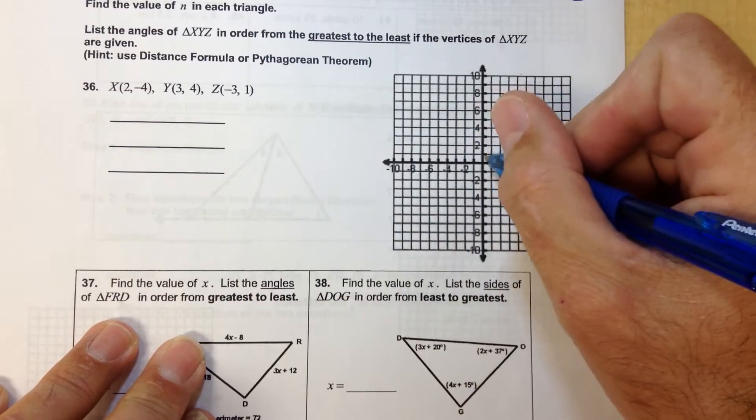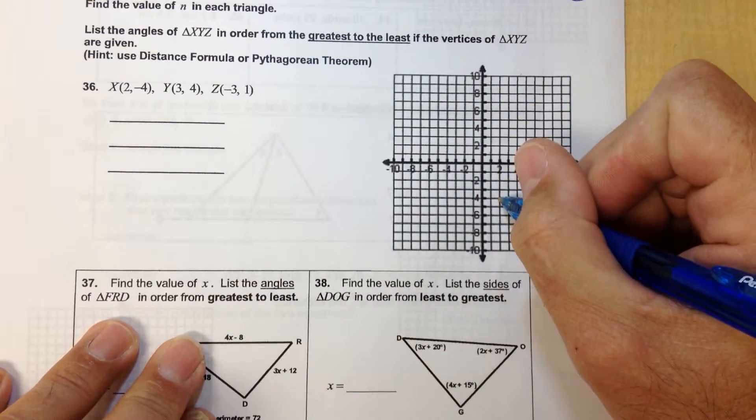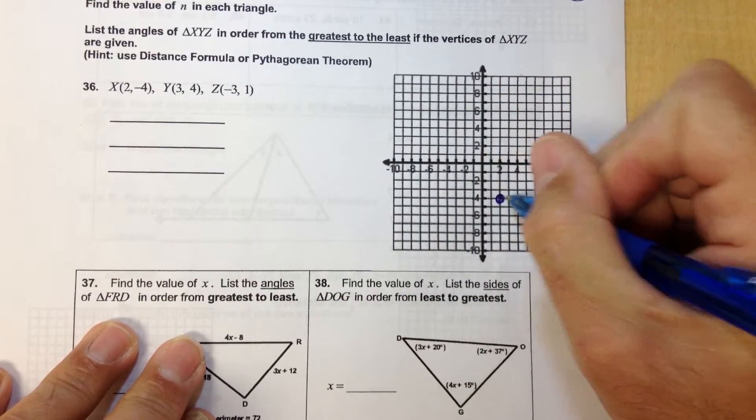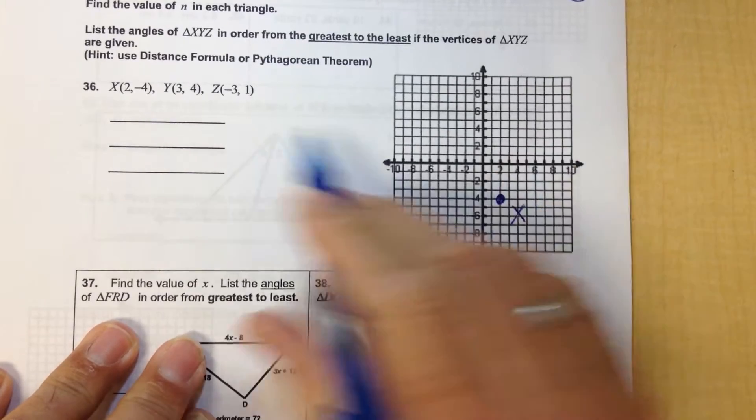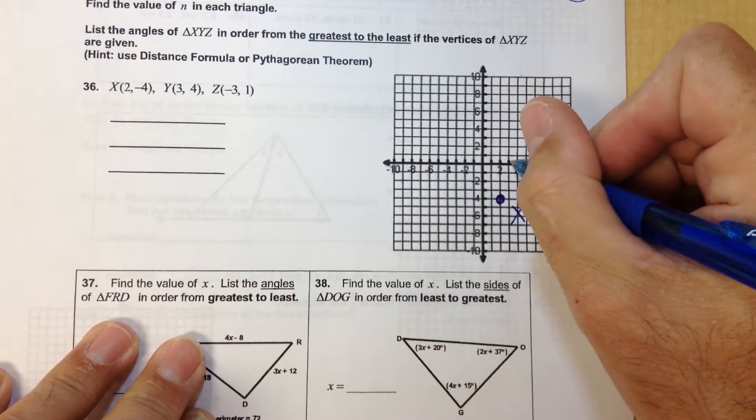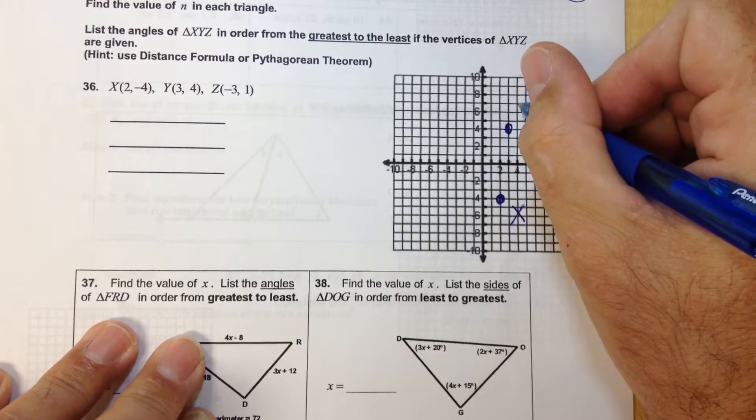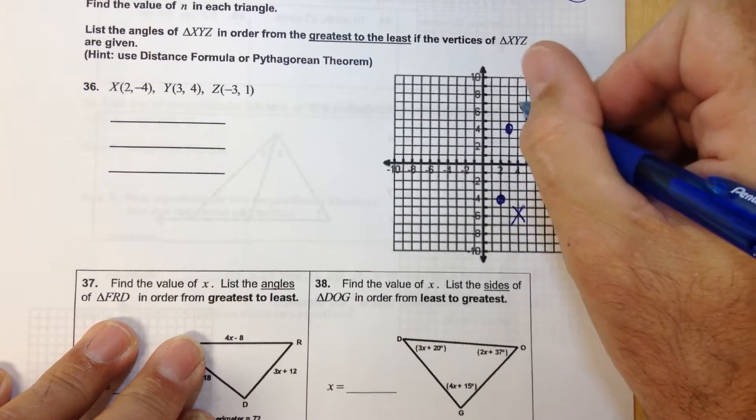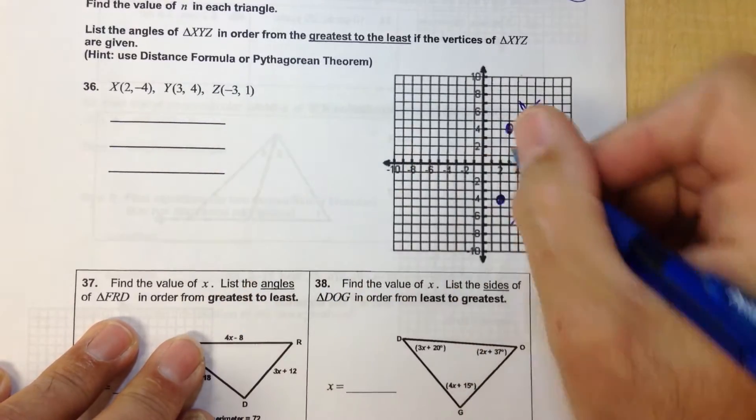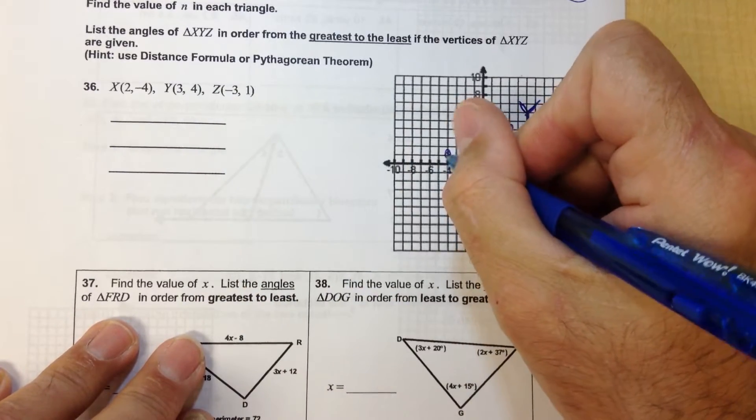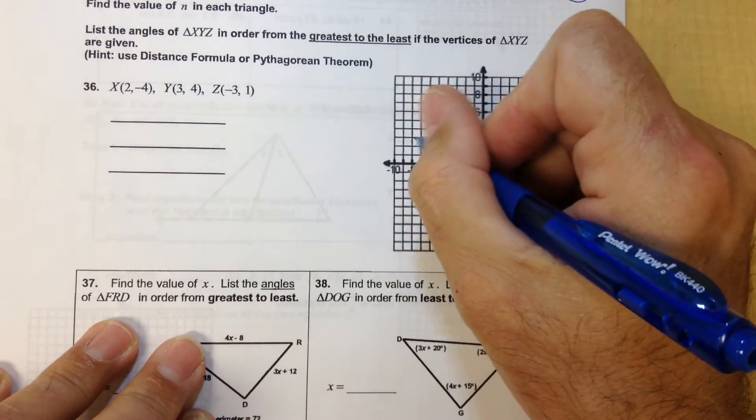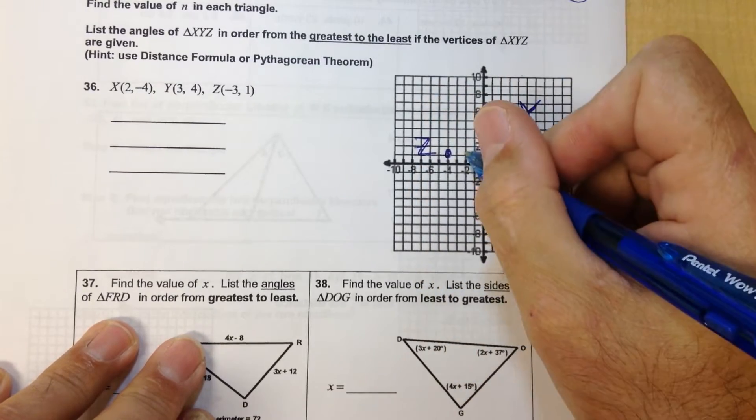So we're going to graph this. 2 comma negative 4 will be right here, and I'm going to put an X by that one. 3 comma 4 will be right here, I'll put a Y by this one. And negative 3 comma 1 is right here, and I'm going to put a Z by that one. Draw your triangles.